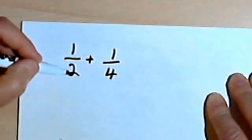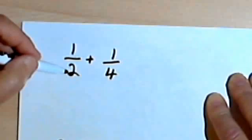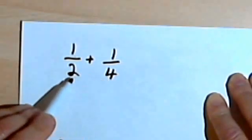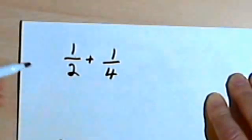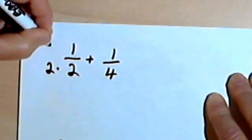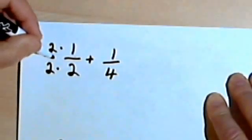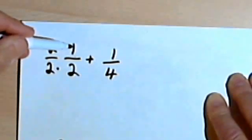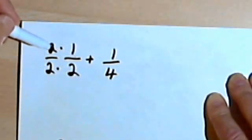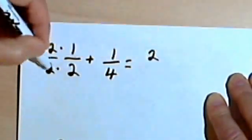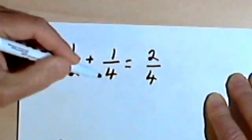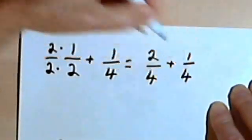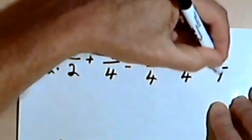I can change a denominator if I multiply it, which means I have to multiply the numerator by the same number. I can change this 2 into a 4 by multiplying by 2. All I'm really doing is multiplying by the fraction 2 over 2, which equals 1, so I'm not changing the value. 2 times 1 is 2, and 2 times 2 is 4. Now I've got 2 quarters plus 1 quarter, and that gives me 3 quarters, or 3 over 4.